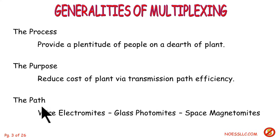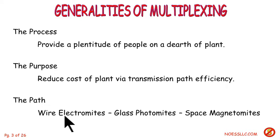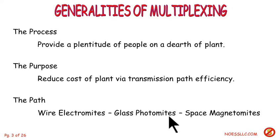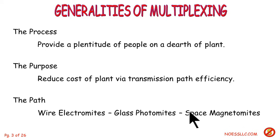What is the purpose of multiplexing? It's to reduce the cost of the plant via transmission plant efficiency — meaning I'm going to put a whole bunch of people on just a little bit of transmission path. It's a lot cheaper that way because everybody shares the cost of putting it in and maintaining it. The path can be wire, which requires electronics, or glass, which requires photonics, or radio systems.